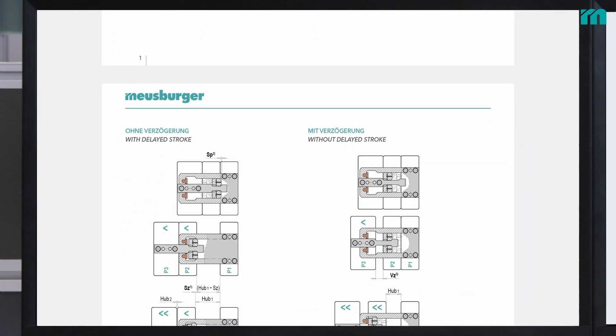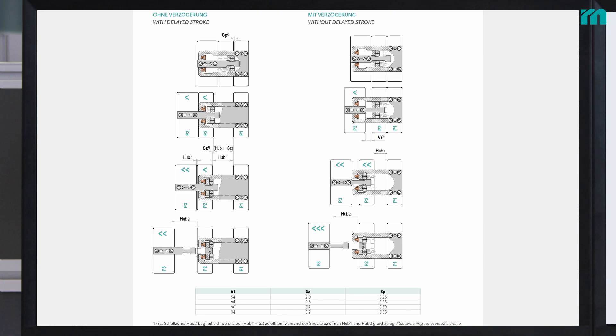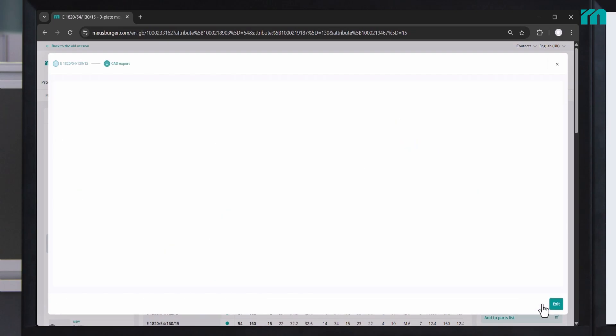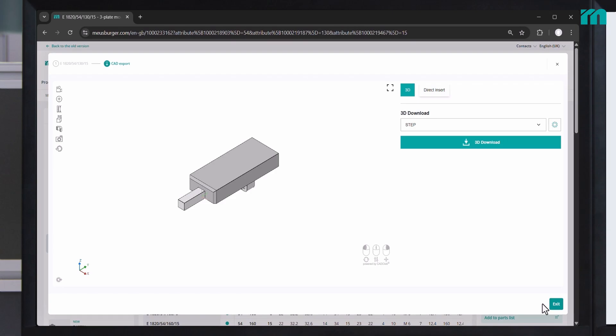The flat latch locks should always be positioned symmetrically. When the correct latch lock has been selected, the 3D model is shown in live view. By entering stroke one, the delay is further adjusted. The ready-to-install 3D model can then be exported.